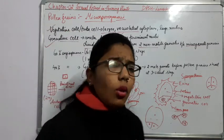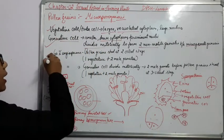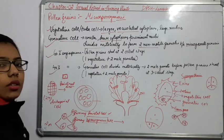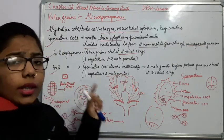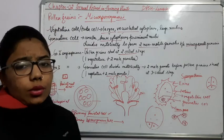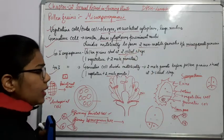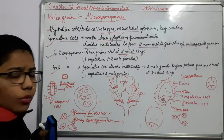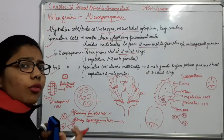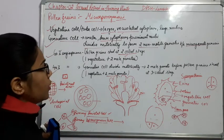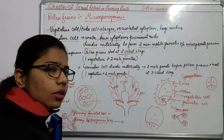The question arises how these anthers are going to dehisce. There may be two cases: the two-cell stage and the three-cell stage. 60% of angiosperms — the majority of flowering plants — shed at the two-cell stage. In the second condition, in the lesser number of angiosperms, the generative cells again divide mitotically before the dehiscence.